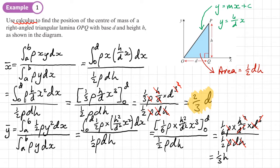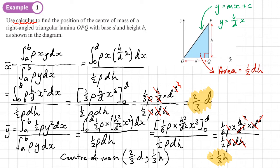The centre of mass is at coordinates (2/3 D, 1/3 H). This matches the standard formula for the centre of mass of a triangle — adding x coordinates and dividing by three gives 2D/3, adding y coordinates and dividing by three gives H/3 — the same result.